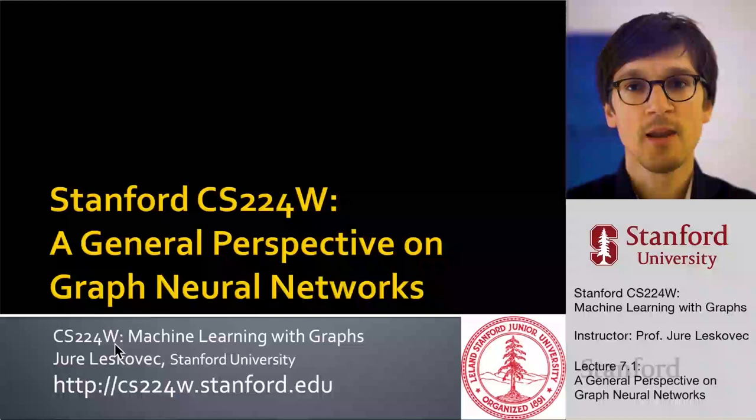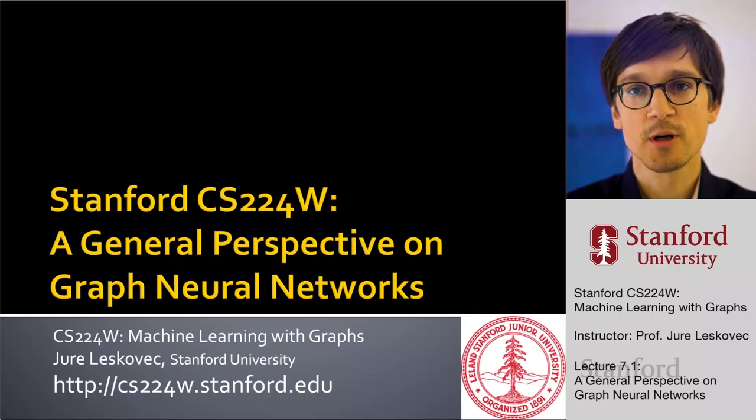So now with this quick recap, let's talk about how do we generally define graph neural networks and what are the components of them, and how do we mathematically formalize these components.